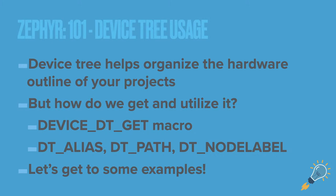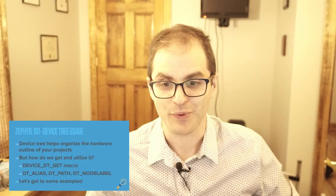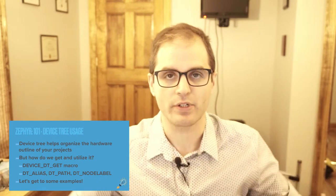The main macro Zephyr has changed to — it used to be an API call, now it's a macro called `device_dt_get`. This is how you get devices from the device tree, and it all happens at compile time, which is very handy. If you've referenced a device wrong, you're going to get a compilation error versus a runtime error, which is even harder to debug — like why is your application halting or panicking at a particular spot.